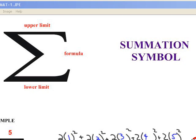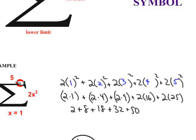Let's look at this example here. As you can see, the upper limit, or how far you go, is 5. Where you start from is 1, right? And the formula is 2x squared.